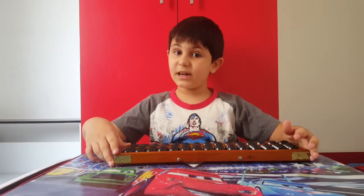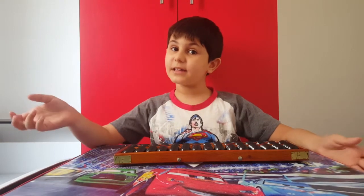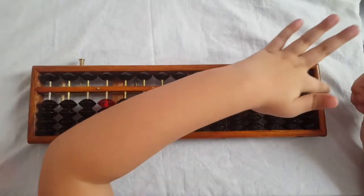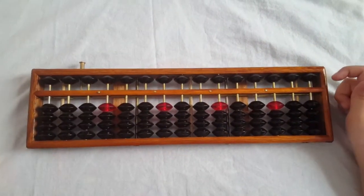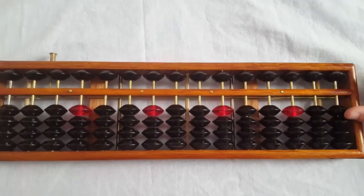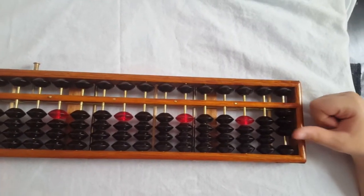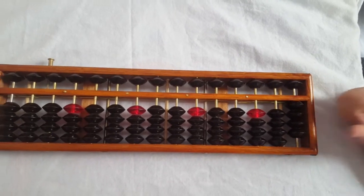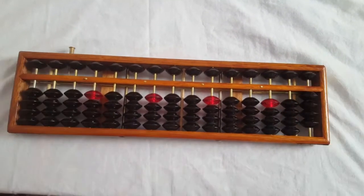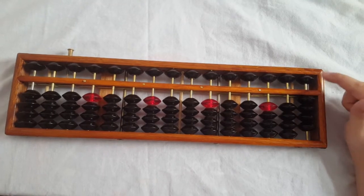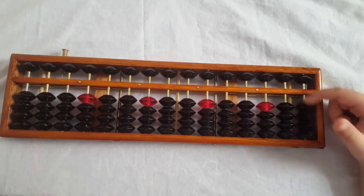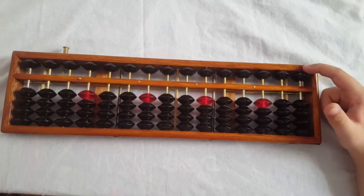Let's learn to count on the abacus. When the abacus is like this, it's number zero. One, two, three, four. Where is number five? This is number five. We move these down and we move the five down.